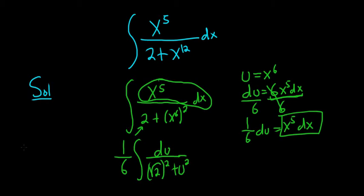And let me recall the formula for you over here on the left. If you have the integral of dx over, let's say, a squared plus x squared, this is equal to 1 over a, arctangent of x over a, plus our constant of integration C.